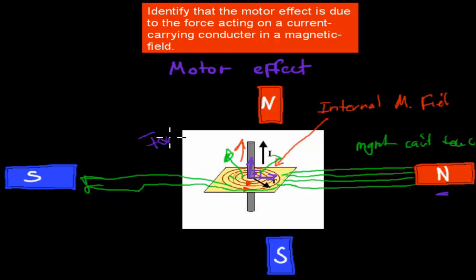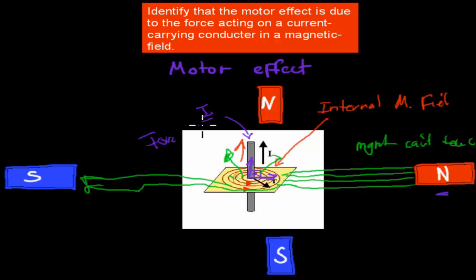So: the motor effect is due to the force acting on a current carrying conductor in a magnetic field. Here we have our current carrying conductor, and this external magnetic field is pushing the magnetic field of the current carrying conductor away. Because otherwise, the actual field lines would clash — and magnetic lines are never allowed to clash — that's why the conductor has to move away to make way for the external magnetic lines. And that's what allows movement to occur. That's how we can use magnets to move something, especially something that carries its own current.